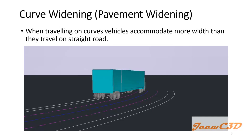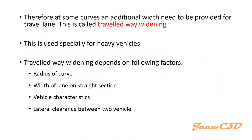In that case, we need to increase the width of the lane so that the full width of the vehicle will be accommodated inside the road. This increased width inside curves is called curve widening or pavement widening. It is also called travel way widening, because we are widening the travel way. There is another type called side distance widening, used when side distance is obstructed by an object on the road.